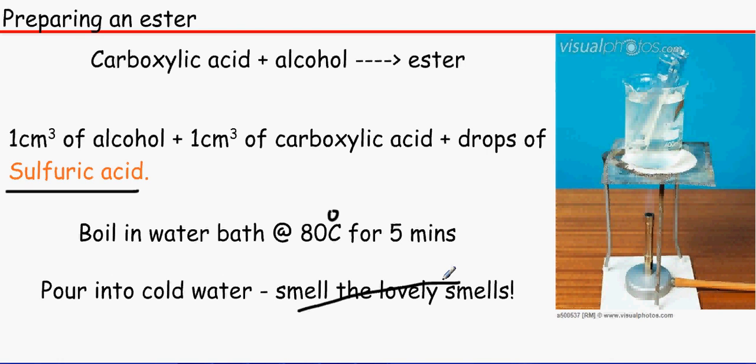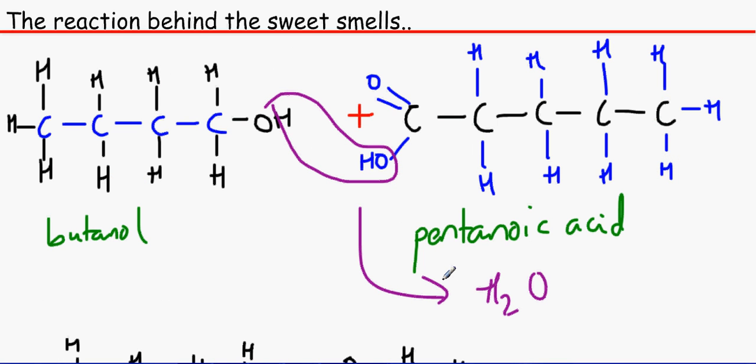So what is the chemical reaction that is involved? We've got the alcohol here which I have named butanol and we've got the carboxylic acid here which I have named pentanoic acid. What happens is that the H from the alcohol reacts with the OH from the carboxylic acid to produce water and to produce the ester.